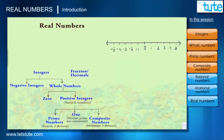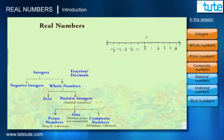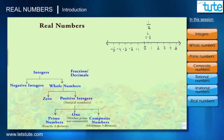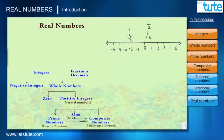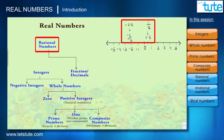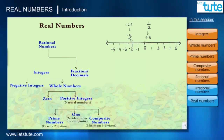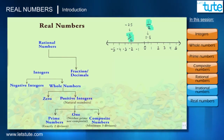On the number line, in between integers there are many more numbers present in the form of fractions or decimals. For example, between 0 and 1 there is the number 0.5, which can be written as 1/2. Similarly, between −2 and −3 there is the number −5/2, or −2.5 in decimal form. These fractions are called rational numbers — the word rational comes from the word ratio, since 1/2 and −5/2 are ratios of two integers.